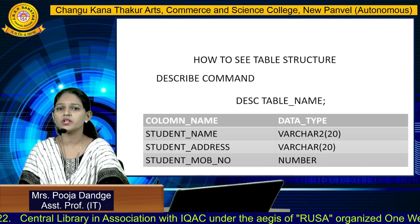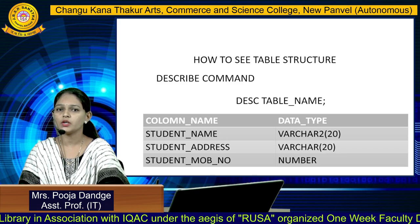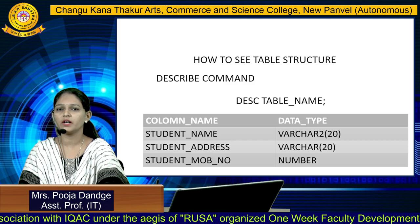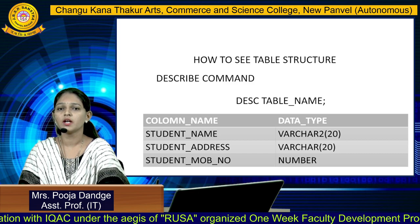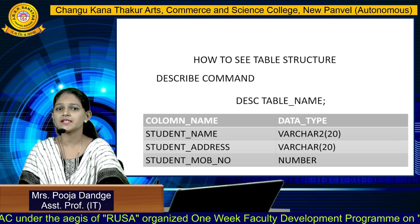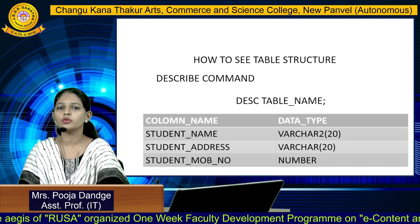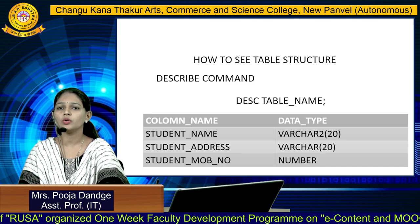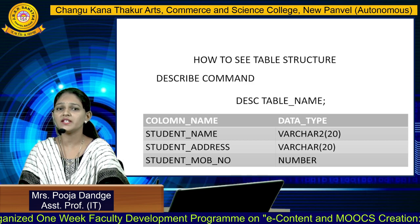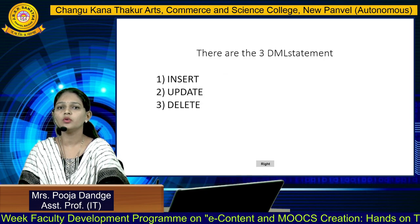Now, how to describe the structure of that table? By using the DESCRIBE command we can describe our table structure. The syntax is: DESCRIBE table_name. Here I describe my student table and the output shows the column list with their data types.